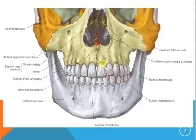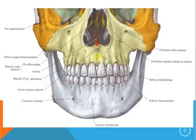Maxilla — actually there are two maxillae, the right and the left, joined right here in the sutura intermaxillaris. Maxilla is part of the viscerocranium. The viscerocranium is the skeletal face. There are 14 bones that make up the viscerocranium and the maxillae are two of them.